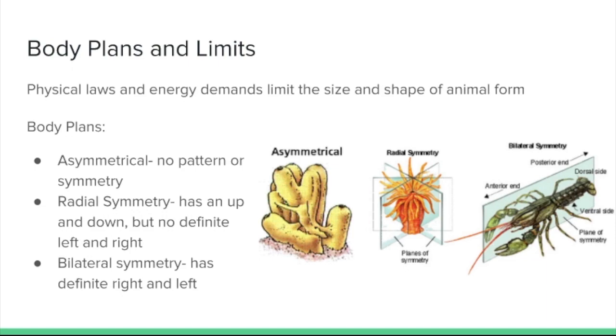Now bilateral symmetry is the type that we're probably most familiar with. We see this in most animal organisms where you have a definite left and right, like the hands in a human or if you're comparing the left and the right side of a shellfish creature.